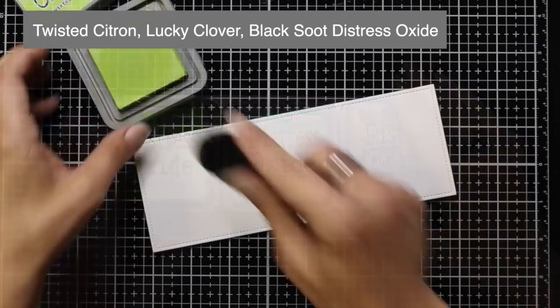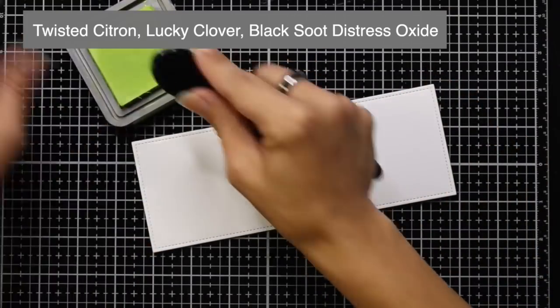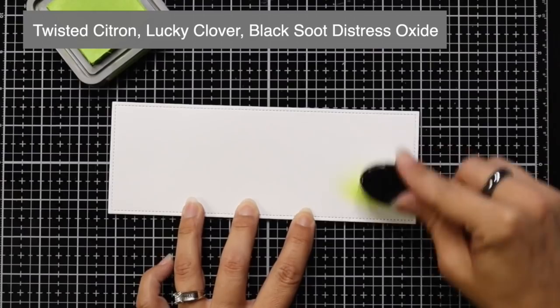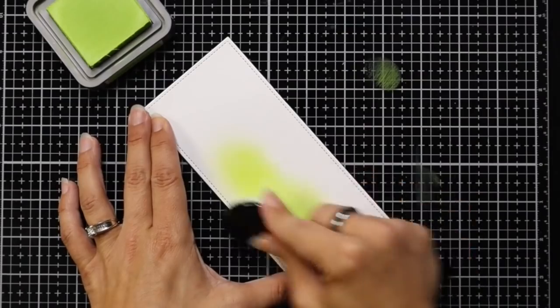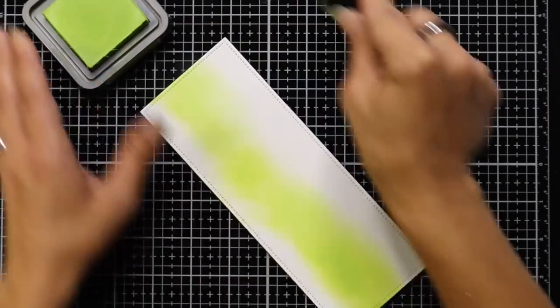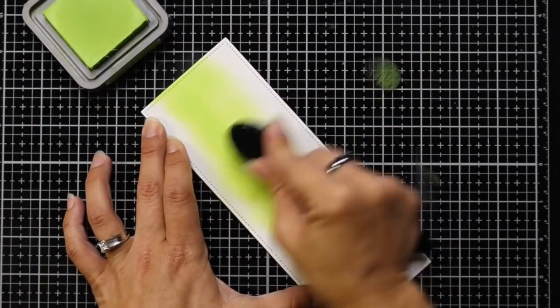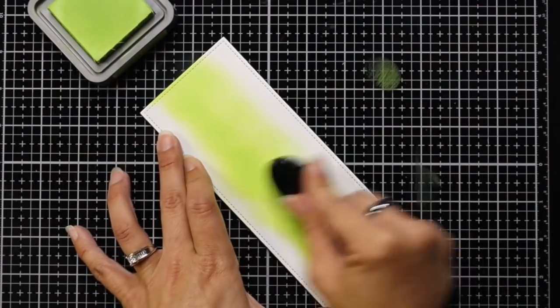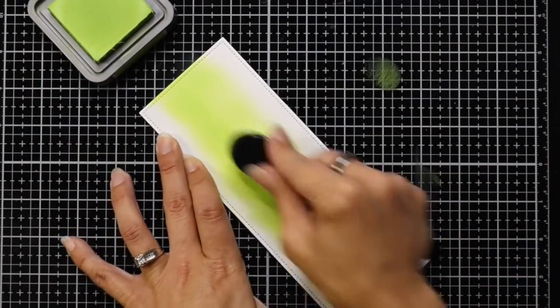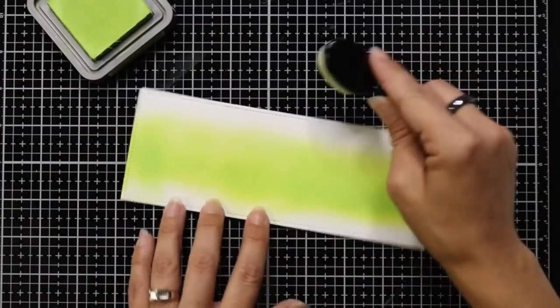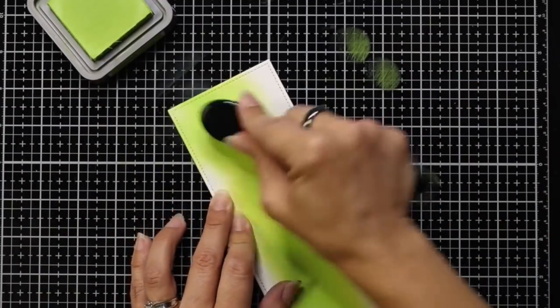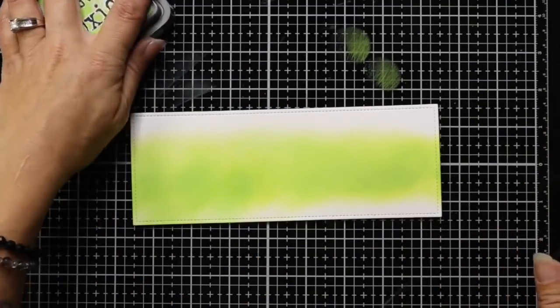Moving on to my background, I have Twisted Citron, Lucky Clover, and Black Soot Distress Oxide ink. So we are creating our spooky background. This is kind of the setting of the scene. I'm adding that first layer of Twisted Citron using a blending brush, and I'll bring in that stitched hillside just to make sure I'm going down far enough since my hill does kind of dip a little bit.